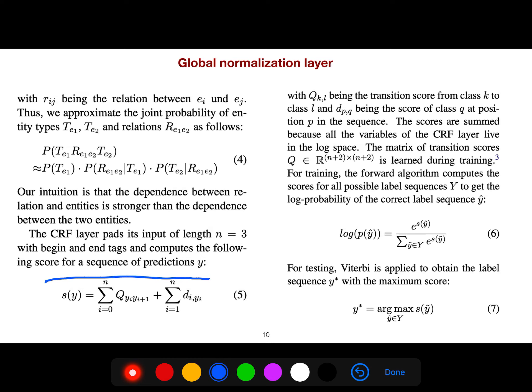Q is the transition score. Everything is the same except that we're also considering the relations. Q is the transition score from class k to class l—it's a matrix of transitions.